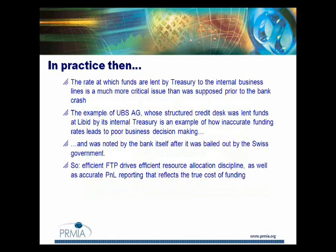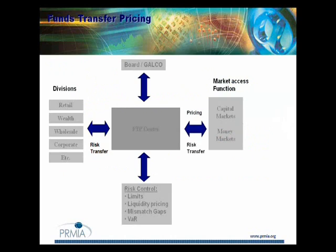What do we have in the internal funding model? I have an internal funding regime where I've got the business lines on the left. Let's assume in this picture we've got a retail banking business, a private bank, what I've called wholesale - so in essence an investment banking type function - a corporate bank and so on. These are the business lines dealing with their customers. And then we've got in the middle what I've called the FTP center. That's often the treasury desk.